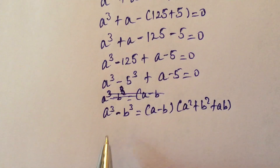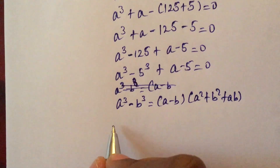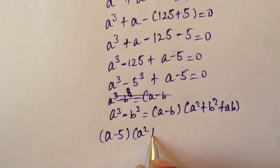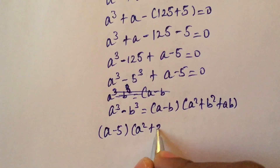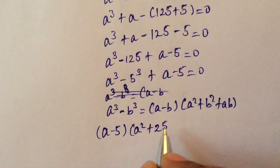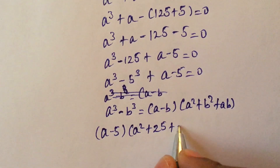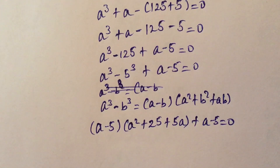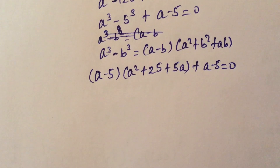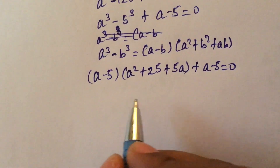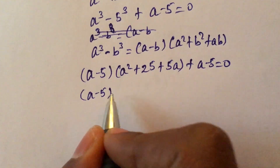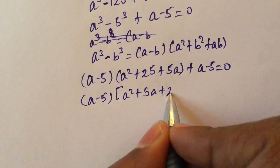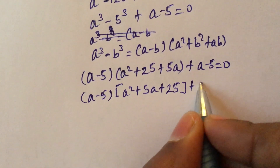Applying the formula to a cubed minus 5 cubed, where b equals 5: a cubed minus 5 cubed equals a minus 5 times a squared plus 5a plus 25. Adding the remaining term, we have a minus 5 times a squared plus 5a plus 25, plus a minus 5, equals 0.